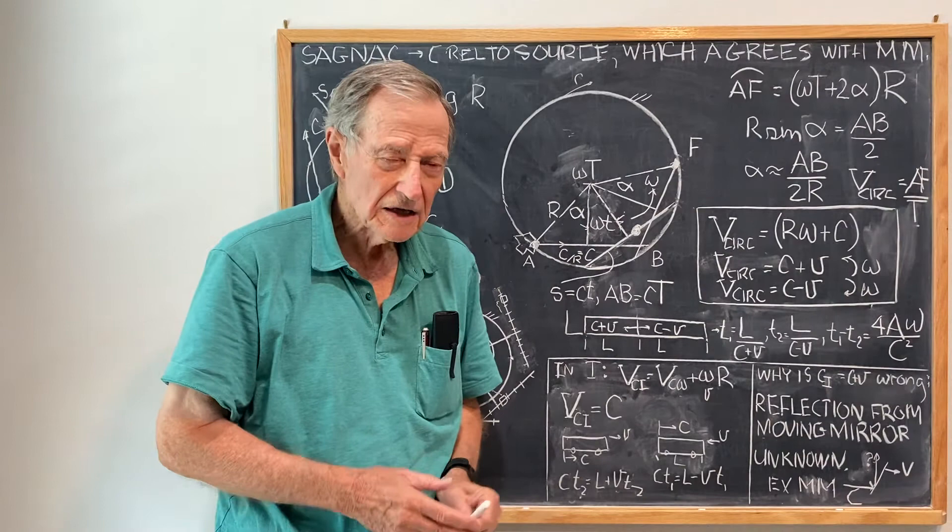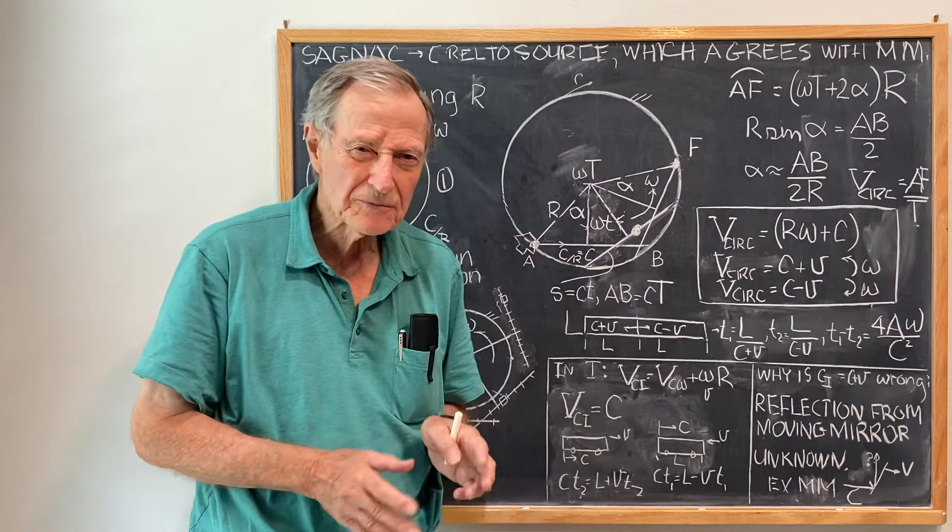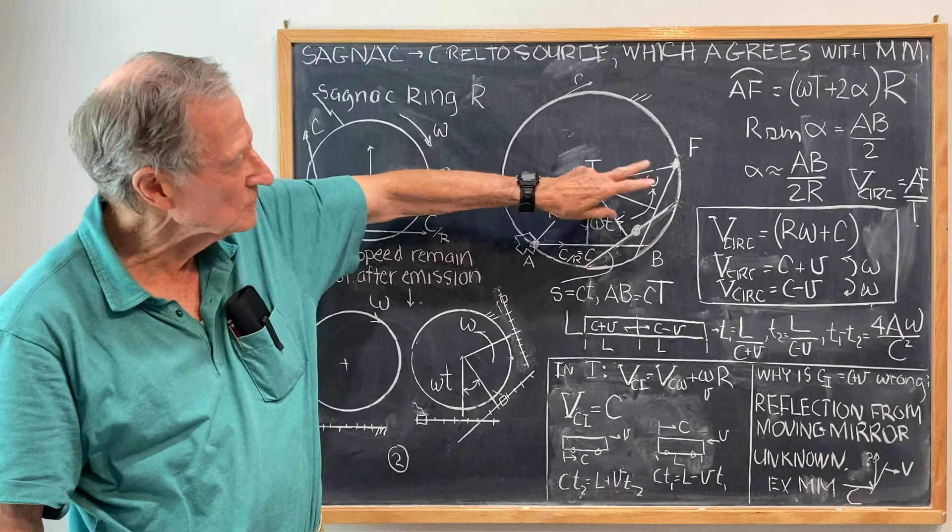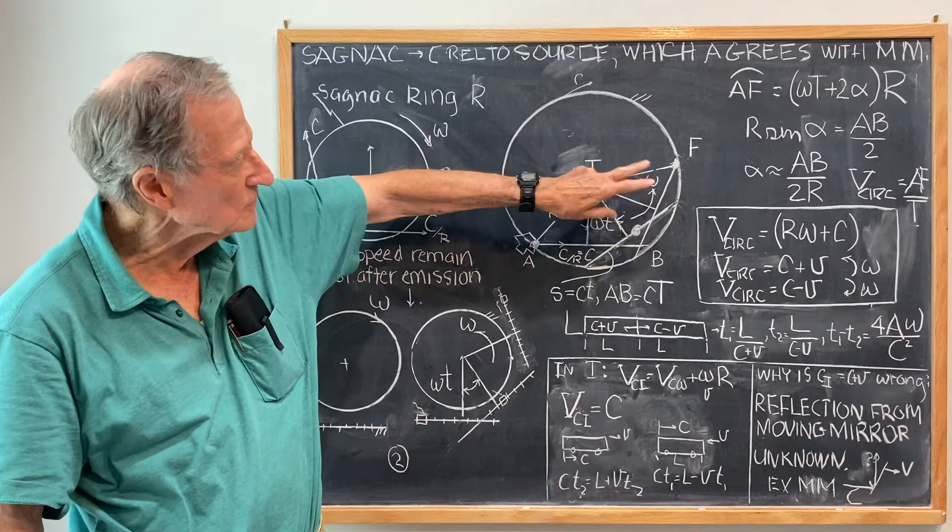So I went through it kind of fast, and some things are a little short, but the essence of the whole idea is that of the rotating path, which gives you the circumferential velocity with respect to the stationary ring as C plus V. So, thank you.